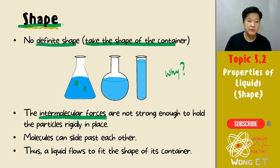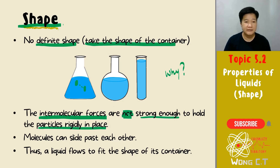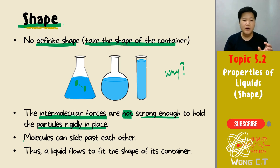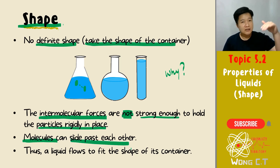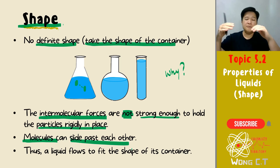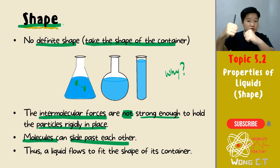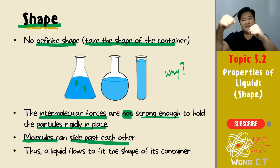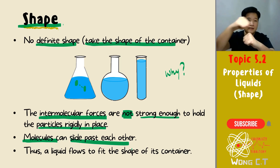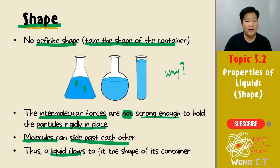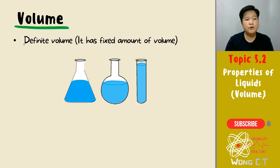The reason is because the intermolecular forces between the particles are not strong enough to hold them in a rigid place. The intermolecular forces in the liquid are not as strong as in a solid, which can hold molecules in a very specific place. That's why liquid molecules can slide past each other — that's why liquid can flow and fit into the shape of its container.